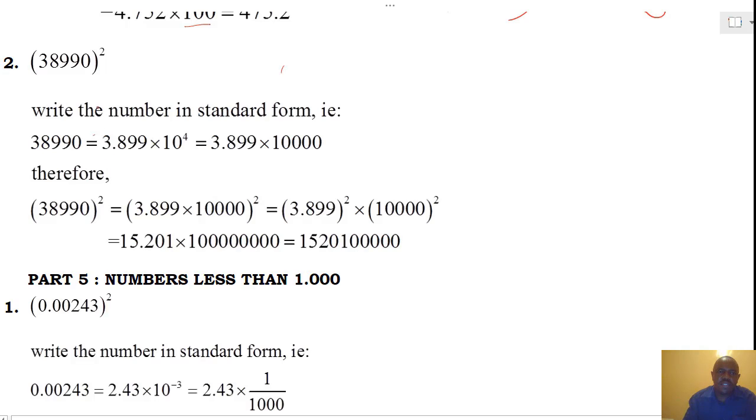Another example under this category is 38,990. We find its square. The first thing, as we had earlier learned, is we write the number in standard form. And the decimal point is after 0, and we shall move it up to between 3 and 9. Hence, our new number becomes 3.899 multiplied by 10 to power 4. Now, as we had earlier learned, the first step we'll do is we expand 10 to power 4, and 10 to power 4 will give us 10,000.